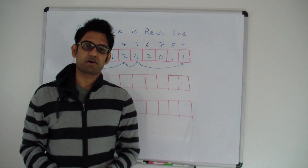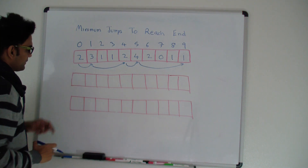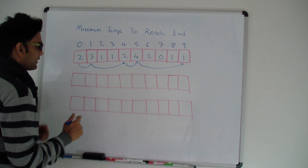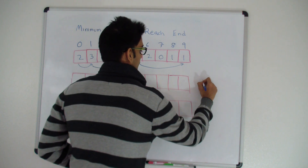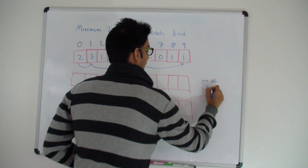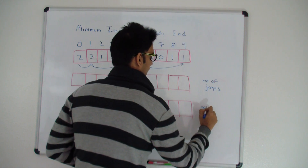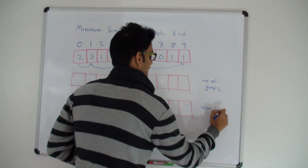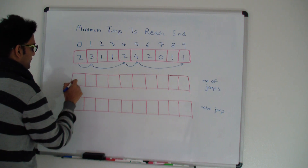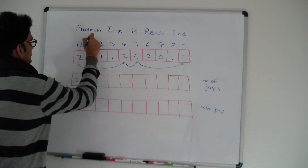So how do we solve this? We will use dynamic programming. I have two arrays of the same length as the original array — one will keep the number of jumps, and the other will keep track of the actual jump path.